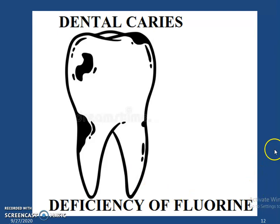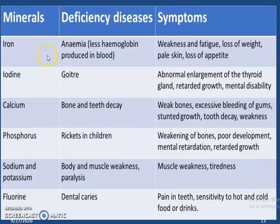Now we are going to go through a list of minerals, the deficiency diseases they cause, and their symptoms. If we do not take enough iron, we suffer from a deficiency disease called anemia, meaning less hemoglobin is produced in our blood. The symptoms are weakness and fatigue, loss of weight, pale skin, and loss of appetite.